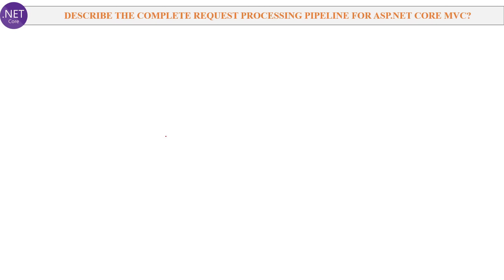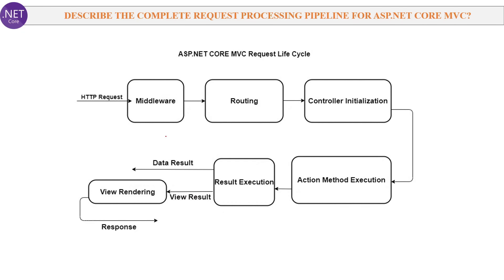Next question: Describe the complete request processing pipeline for ASP.NET Core MVC. The flow is: an HTTP request starts from middleware, then goes to routing, then the controller is initialized, then the action method is executed, then the view result is executed, and finally the view result renders as the response to the browser. That is the request processing pipeline for ASP.NET Core MVC.